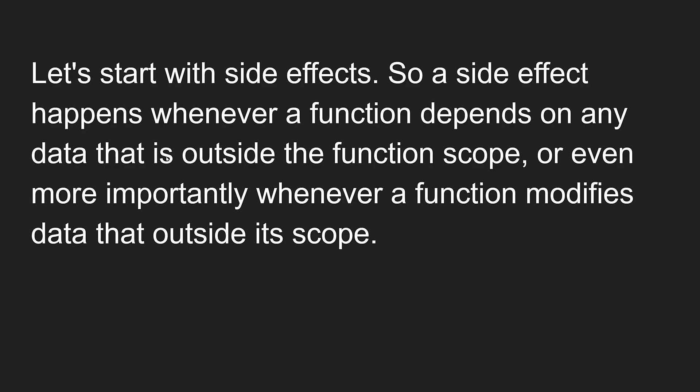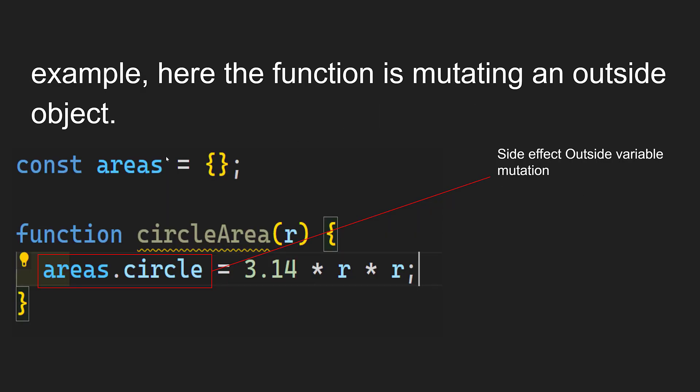Let's start with side effects. A side effect happens whenever a function depends on any data that is outside the function scope, or more importantly, whenever a function modifies data outside its scope — that is called a side effect. In the example, the constant 'areas' is an empty object outside the function. Inside the function 'circleArea', we are modifying that outside variable — this is called outside variable mutation. This function is said to have a side effect. Other examples of side effects are HTTP requests and writing to the DOM.